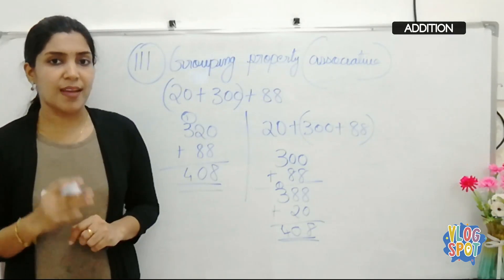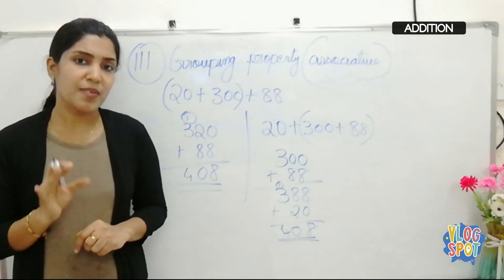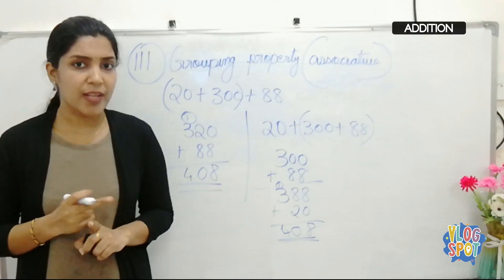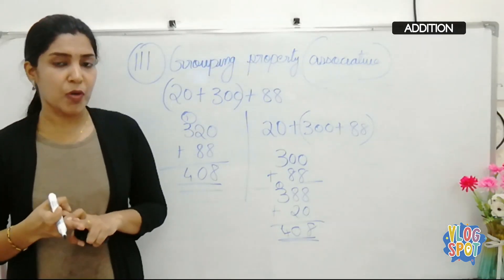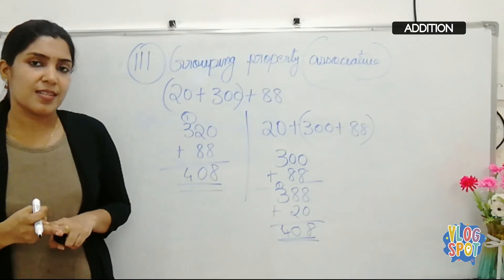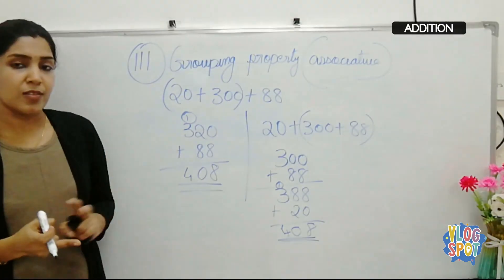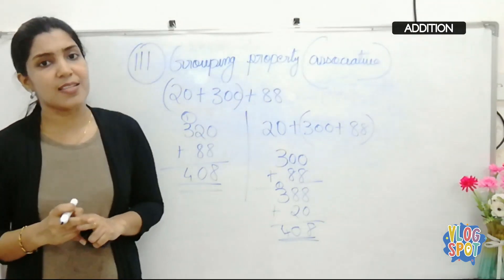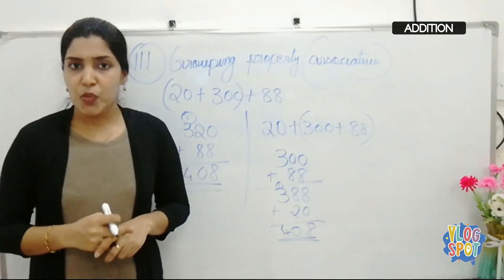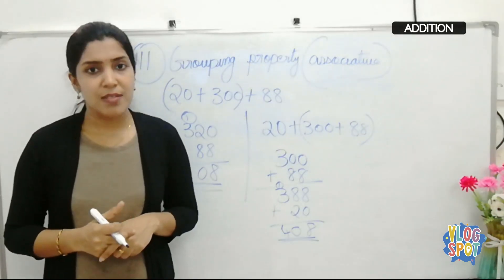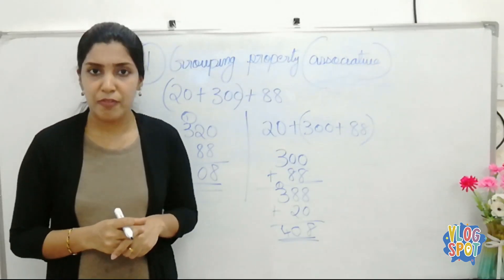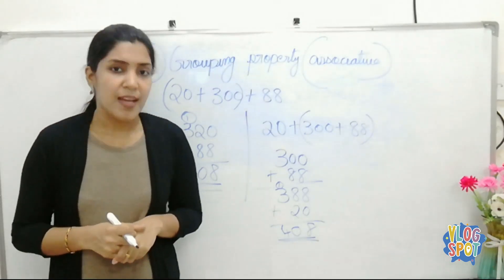So these are the three important properties of addition: the first is zero property; the second is order property, otherwise known as commutative property; and the third is grouping property, also called associative property. I hope you all understood the properties, concepts, and important terms of addition. Good luck, thank you.